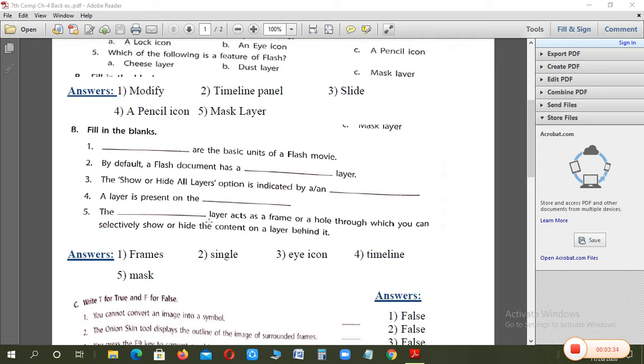The blank layer acts as a frame or a hole through which you can selectively show or hide the content on a layer behind it. Which tool is used to show any content behind it? The layer name is mask. Mask means to hide anything behind it or show it. Mask layer is used in flash.